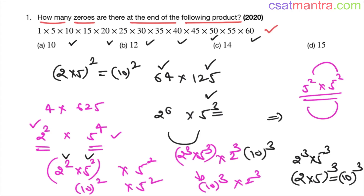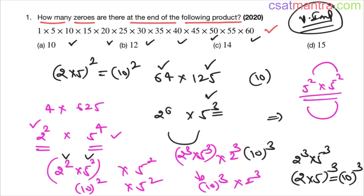These are basics — I have dealt with them separately in the simplification lecture, but whenever we come across them, let's make sure we don't forget. This is a very important question. You can expect similar questions in other UPSC exams and state PSC exams as well. Just look for direct tens, then count the number of 2s and 5s — that's it. Thank you.